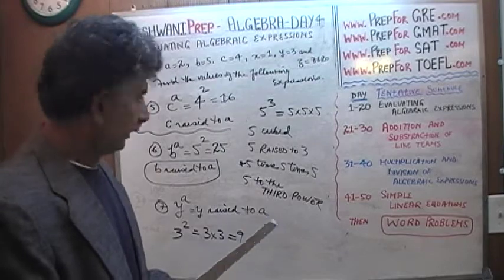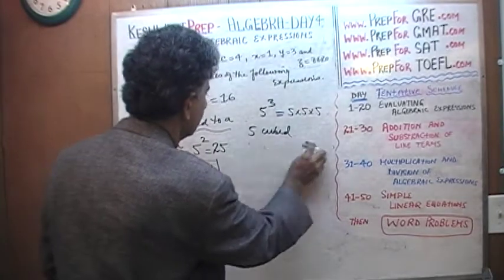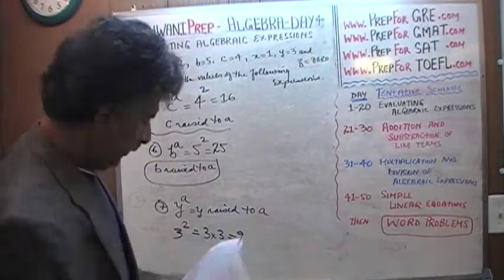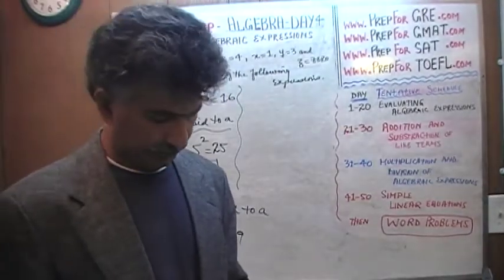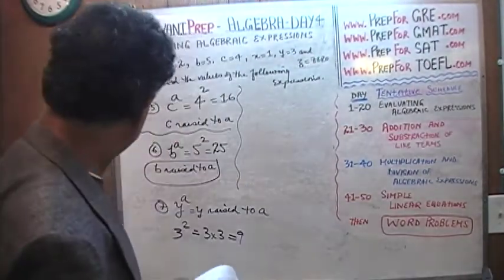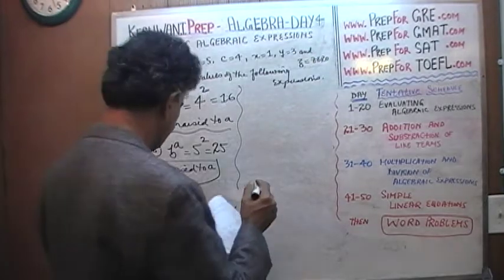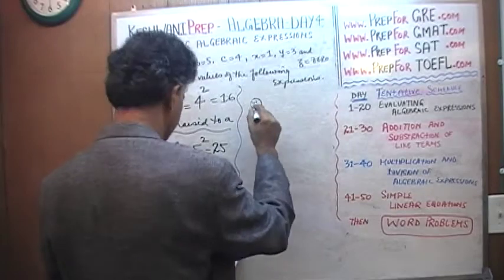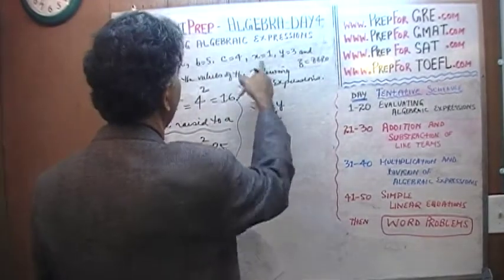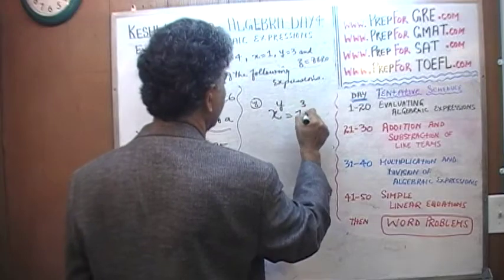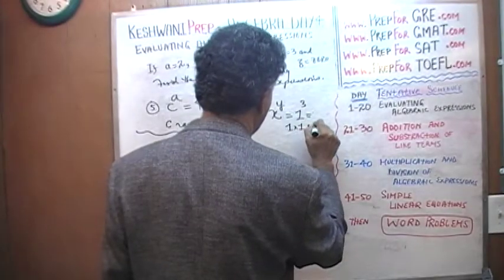Number eight, I need the room so I need to erase everything. Feeling rather proud of myself for coming up with 'he kicked the bucket.' I don't know where that came from. Sometimes it doesn't take much to amuse myself. Number eight - x raised to y. X is 1, 1 raised to y, which is 3. One raised to 3 is simply 1 times 1 times 1, which is just going to be 1.